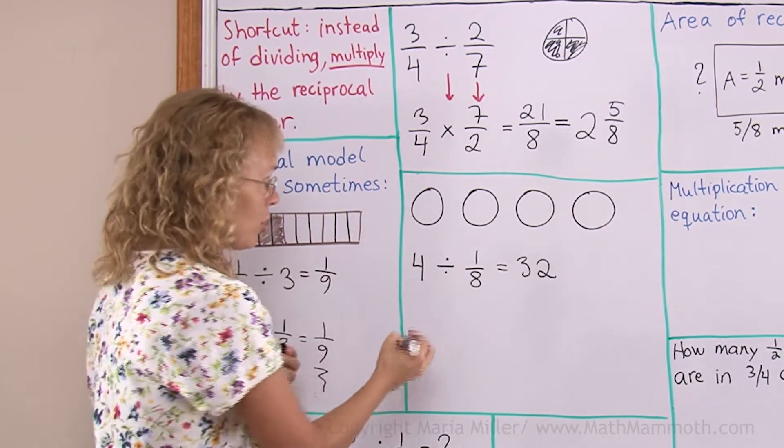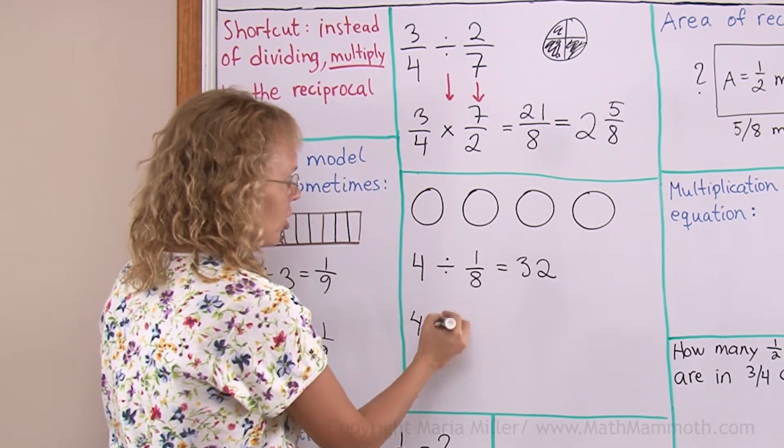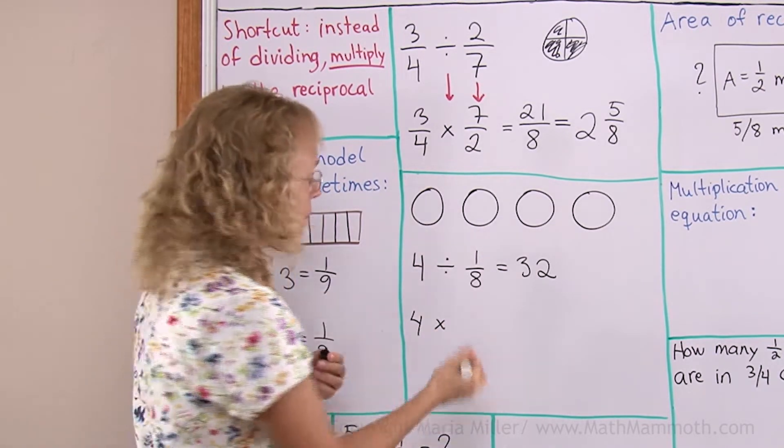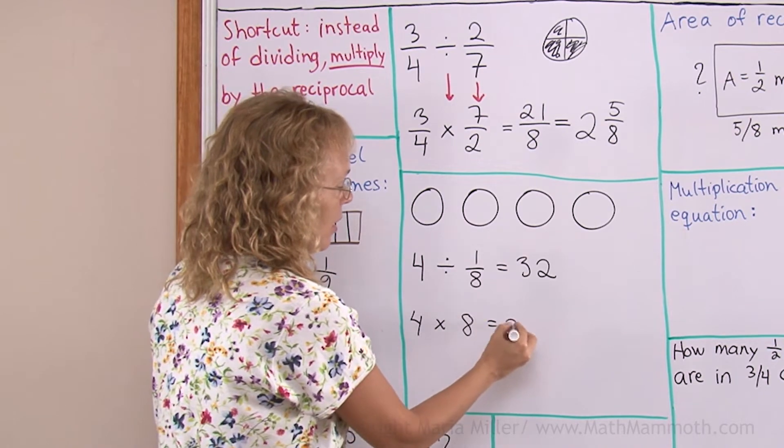Now, the shortcut works too, because you would have 4, this change into a multiplication, and 1/8, when you flip it, it becomes 8 over 1 or just 8. Same thing.